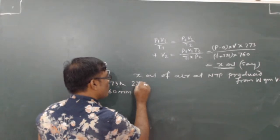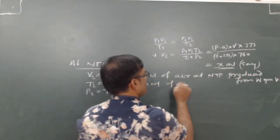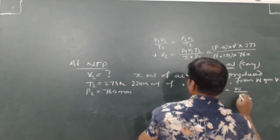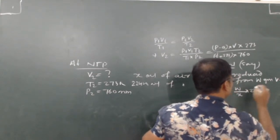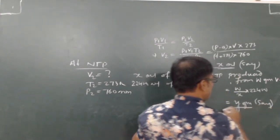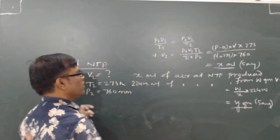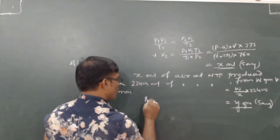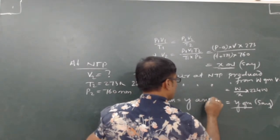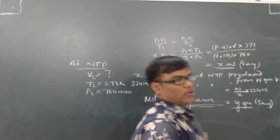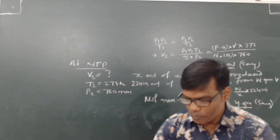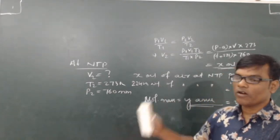X ml of air at NTP is produced from W grams of volatile substance. So 22,400 ml of air at NTP is produced from W divided by X times 22,400 grams — suppose this equals Y grams. Then the molecular mass equals Y AMU. In this method, we can calculate the molecular mass of a volatile substance by the Victor Meyer method.